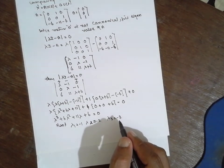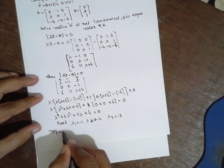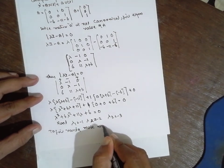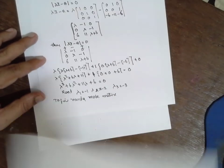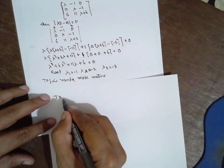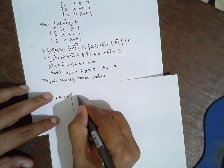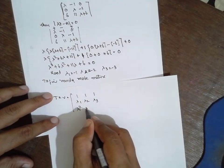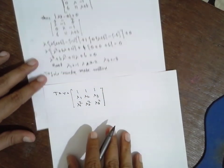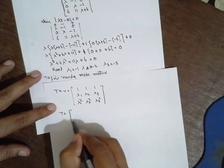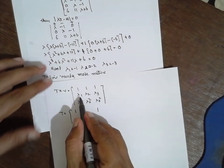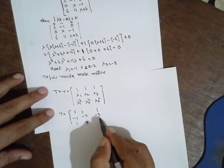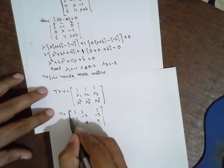Now we find the Vandermonde matrix T. The Vandermonde matrix formula is: T = [1, 1, 1; λ1, λ2, λ3; λ1², λ2², λ3²]. Substituting the eigenvalues: T = [1, 1, 1; -1, -2, -3; 1, 4, 9].